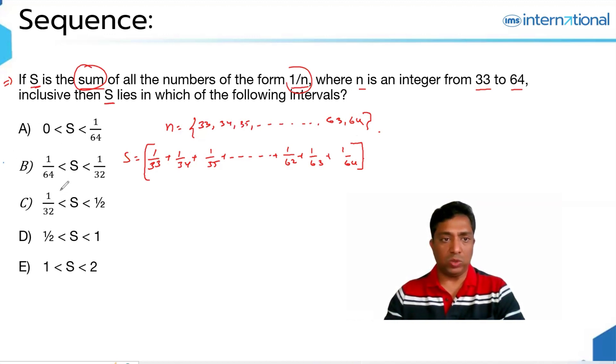You know that you are supposed to work the lower limit of S, and here the upper limit of S. So, this value should be the least value, which should be lesser than the summation of all the numbers, the reciprocals from 33 to 64, which is defined to be S.